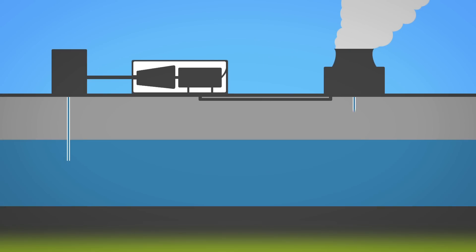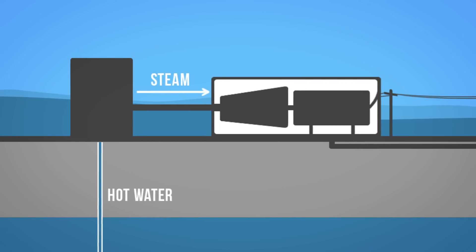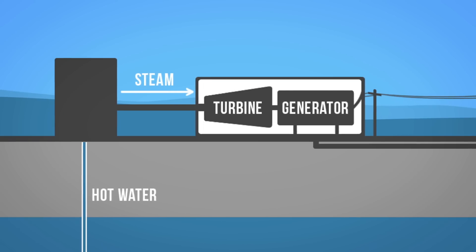Geothermal heat can also be used to produce electricity in a geothermal power plant. Electricity is generated when geothermal heat produces steam that turns turbines on a generator.